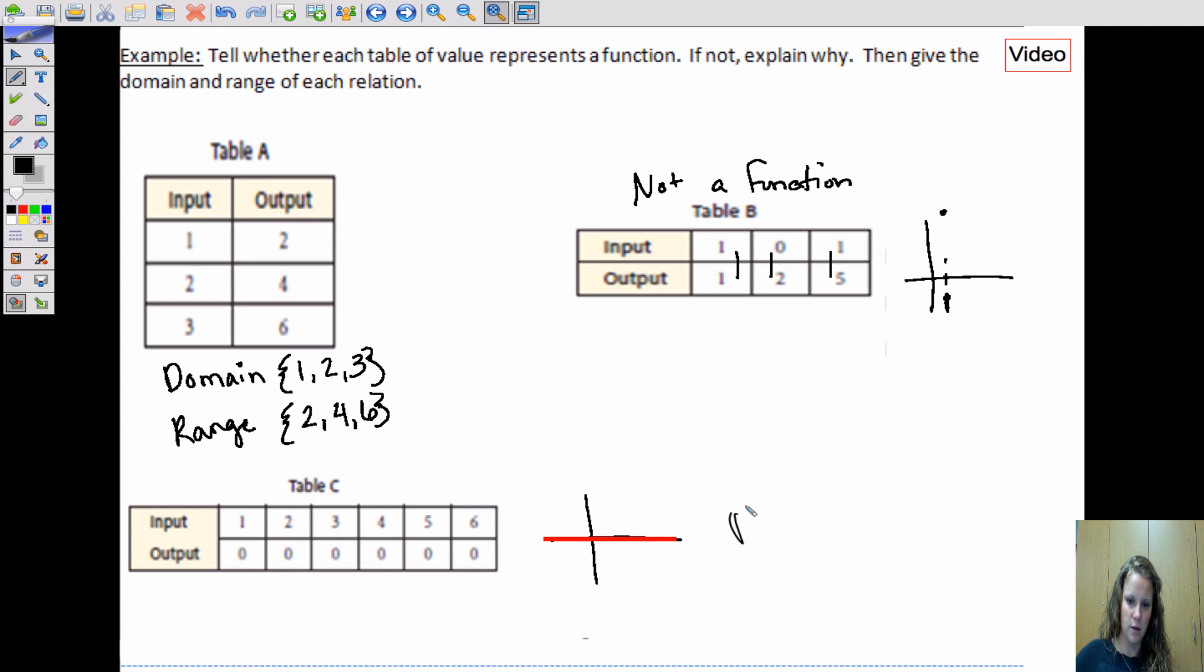So our domain here is going to be {1, 2, 3, 4, 5, 6}.